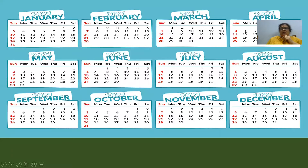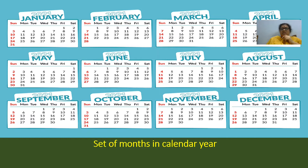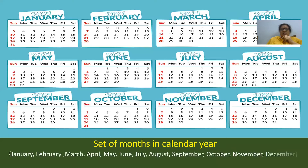What you are observing on the screen is a calendar. If I say any month like July, you can say that is a month in a calendar. So the set of months in a calendar — if anyone asks, you can say they are January, February, March, April, May, June, July, August, September, October, November, and December. These are nothing but the months in a calendar year.